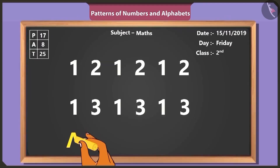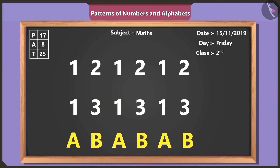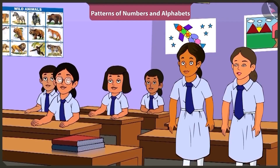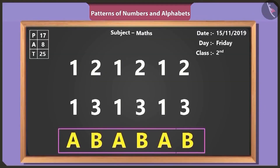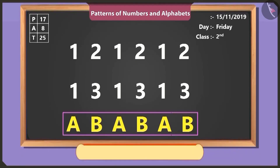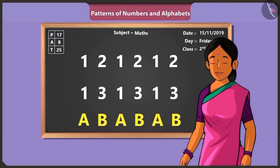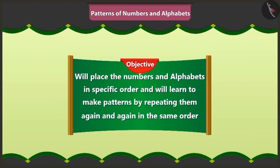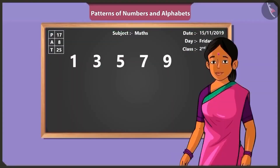Children, now look carefully at what I write on the board. Tell me, what have I written? You have written the English alphabets A and B and repeated them again and again. Oh yes, this is a pattern of alphabets. Well done, Vinny. So friends, today in this video we will place numbers and alphabets in a specific order and learn to make patterns by repeating them again and again in the same order.